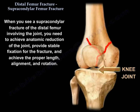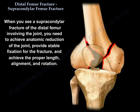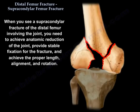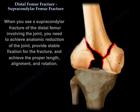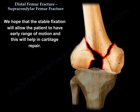When you see a supracondylar fracture of the femur involving the joint, you need to achieve an anatomic reduction of the joint, provide stable fixation for the fracture, and achieve the proper length, alignment, and rotation. Stable fixation will allow the patient to have early range of motion, which will help the cartilage repair.